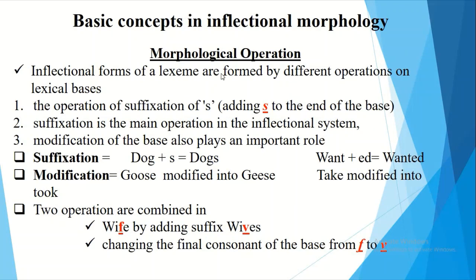The next significant concept for understanding inflectional morphology is morphological operation. Inflectional forms of a lexeme are formed by different operations on lexical bases. The first operation is suffixation — for example, 'dog' plus '-s' equals 'dogs'. Another example is 'want' plus '-ed' giving 'wanted'. In modification operations, 'goose' is modified to 'geese' and 'take' to 'took'. Two operations can also be combined, as in 'wife' becoming 'wives', which involves both adding the suffix and changing the final consonant.